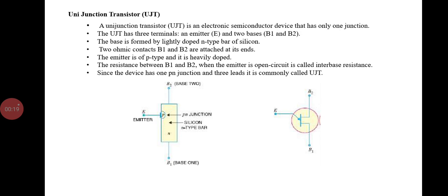The base is formed by lightly doped N-type bar of silicon, and two ohmic contacts, B1 and B2, are attached at its ends. The emitter is of P-type and it is heavily doped. The resistance between B1 and B2 when the emitter is open circuit is called the inter-base resistance.